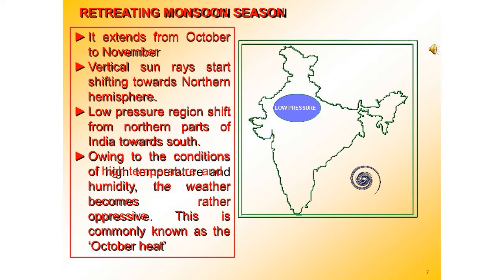The months of October-November form a period of transition from the hot rainy season to the dry winter season. Basically, this period is a transformation period, transforming from the hot rainy season to the dry winter season.